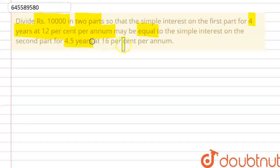4.5 years at 16% per annum. So, here our question. And what is the total amount? The total amount is given, Rs. 10,000. So, if we assume that let Rs. x be the first part.